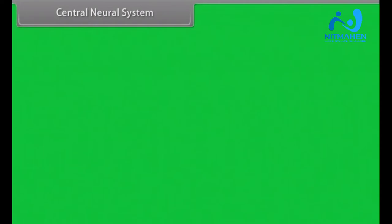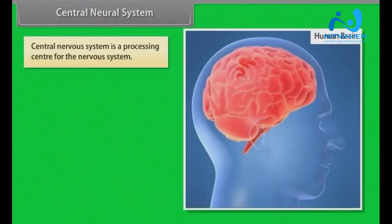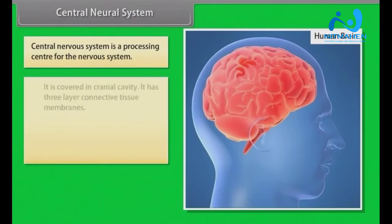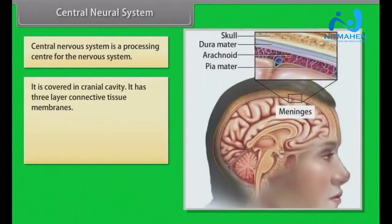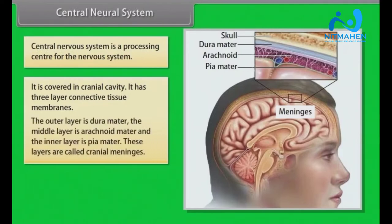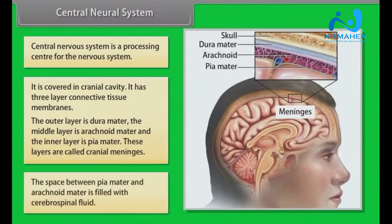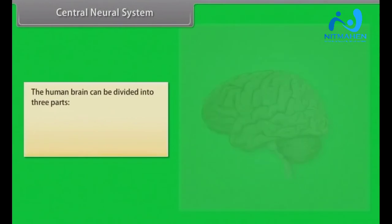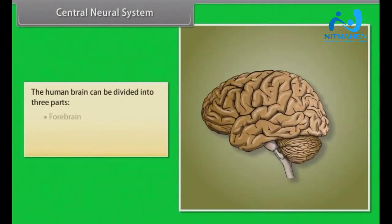The central nervous system is a processing center for the nervous system, covered in the cranial cavity. It has three-layer connective tissue membranes: the outer layer is the dura mater, the middle layer is the arachnoid mater, and the inner layer is the pia mater. These layers are called cranial meninges. The space between the pia mater and arachnoid mater is filled with cerebrospinal fluid. The human brain can be divided into three parts: forebrain, midbrain, and hindbrain.